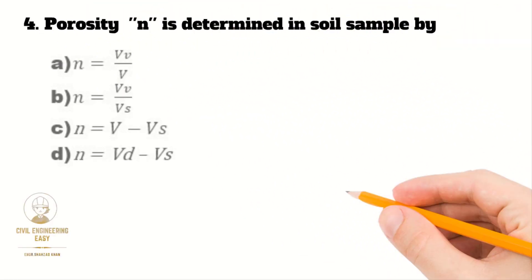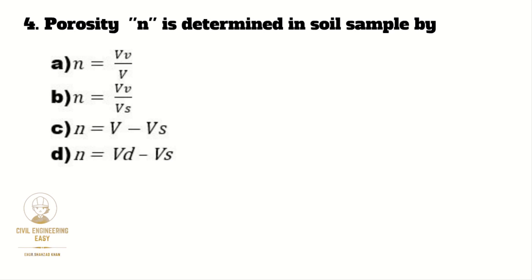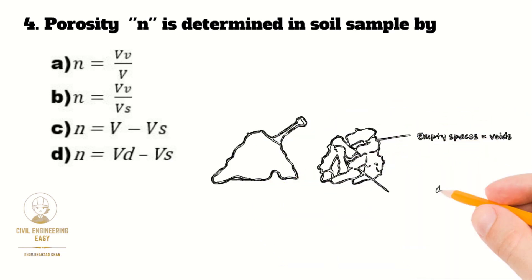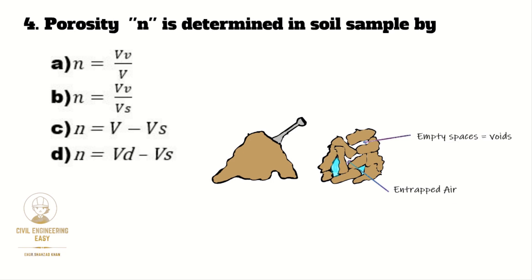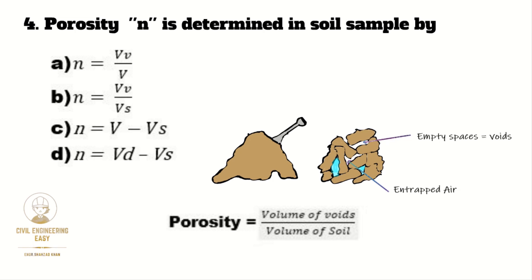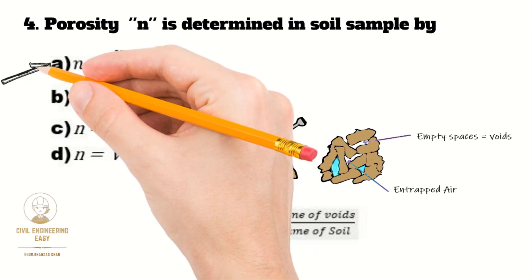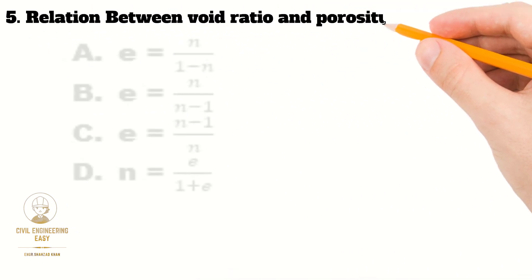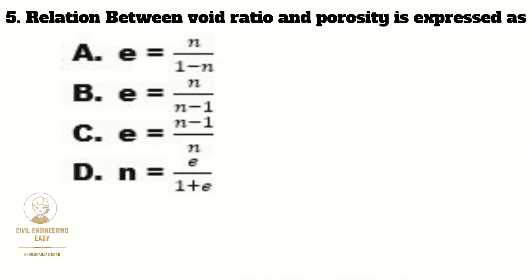In MCQ number four, porosity is determined in a soil sample by the amount of spaces in a rock or soil — this describes its porosity. The more porous the material, the more water it can hold. Porosity equals volume of voids divided by total volume of soil. The correct option is A.